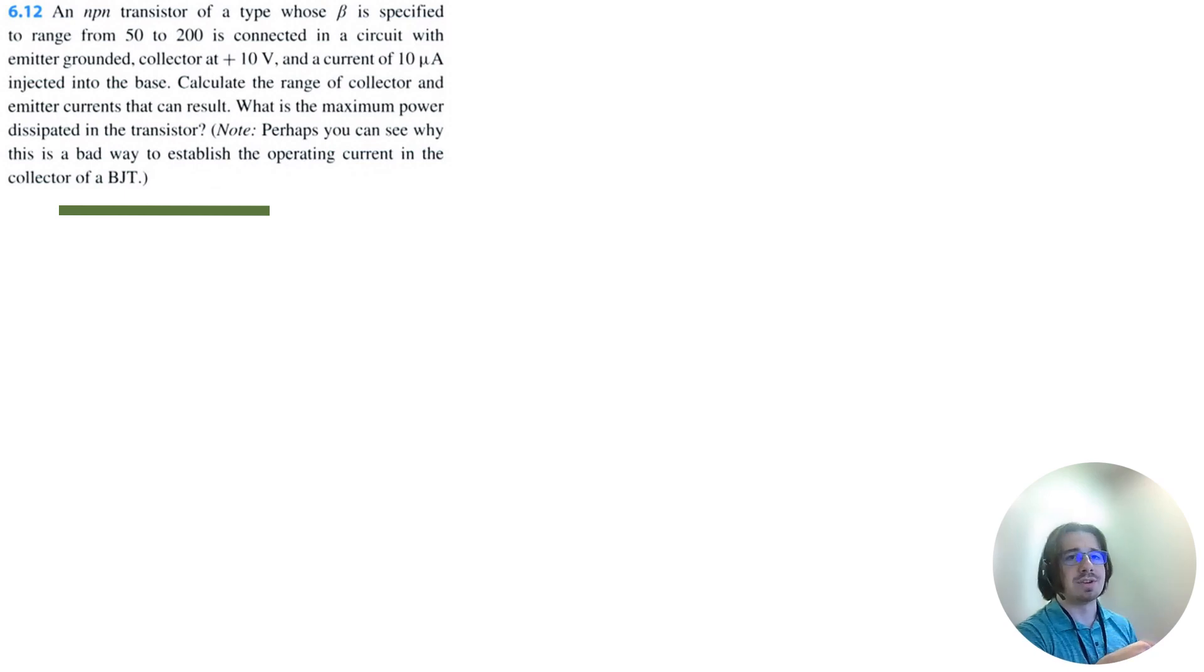We want to calculate the range of collector and emitter currents that can result and the maximum power that can be dissipated in the transistor. I'm going to start by drawing out this BJT. It's an NPN transistor which means the collector will be on the top wire. Then we have our base with 10 microamps injected into it. I'm just going to draw that as a current source and ground it there. Then we have our emitter which is grounded.